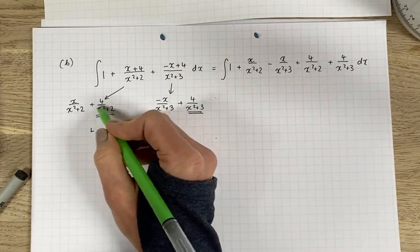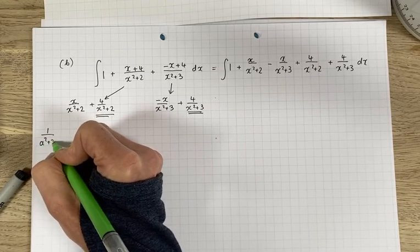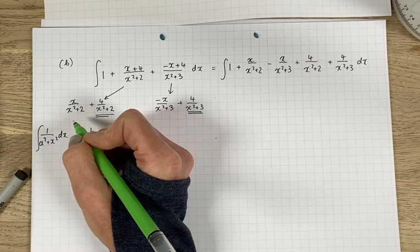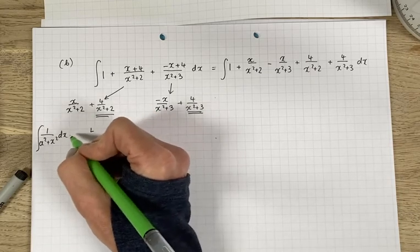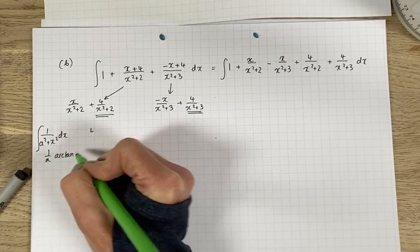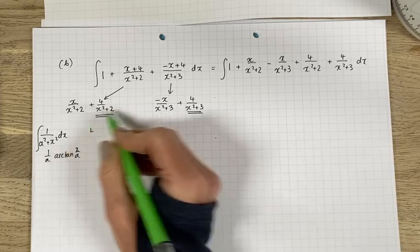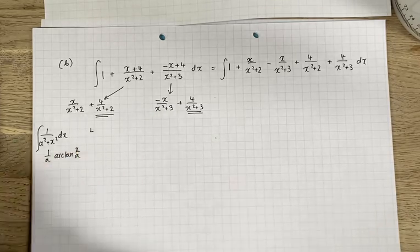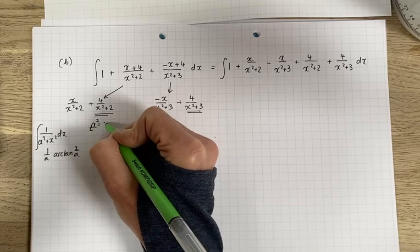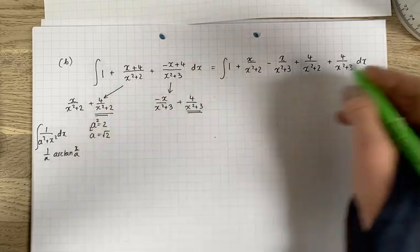Okay so let's deal with these two first. In this instance you can see it will go to arctan. Remember if you've got 1 over a squared plus x squared. That will go to 1 over a arctan x over a. And the second one, the other two will do by substitution. Okay so over here we are going to have a being equal to, a squared is 2. So a is square root of 2.